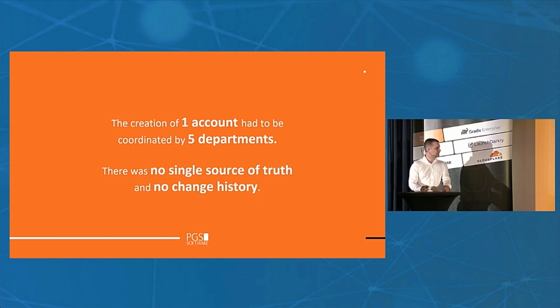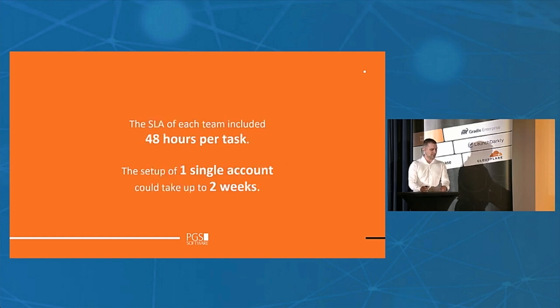And as you can see, five different departments had no single source of truth and no change history. They were just doing their job and the next team jumps in doing their job. Finally we have something working, but nobody knows what happened. And if you want to change anything, we need to go back and do it manually. Each team had 48 hours for their tasks, so for one single AWS account it could be up to two weeks. It sounds crazy.